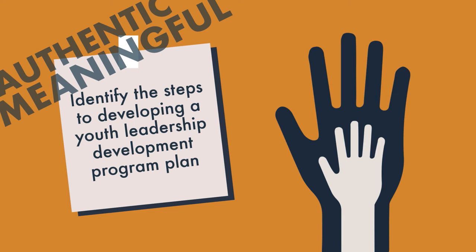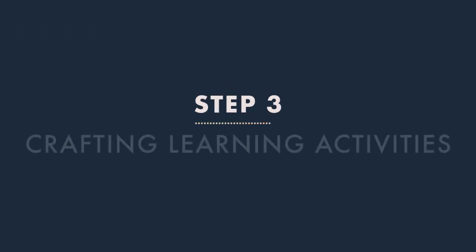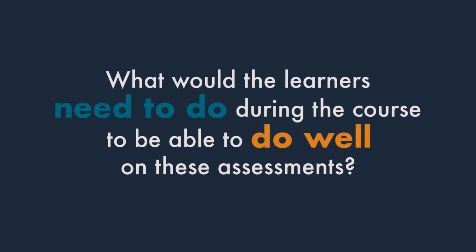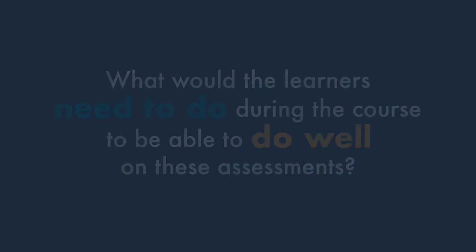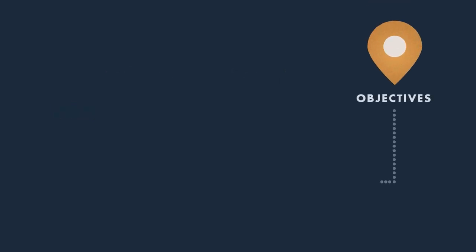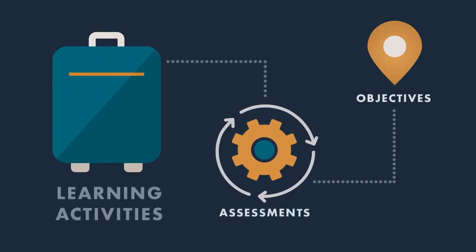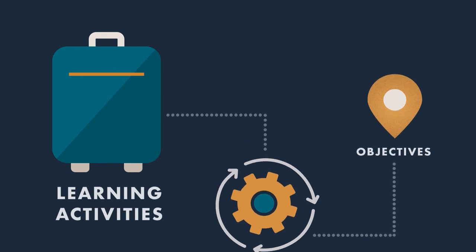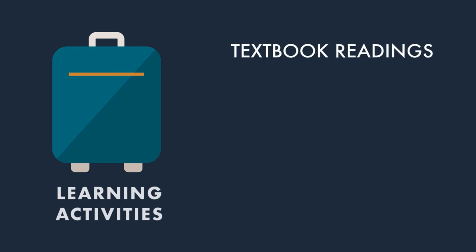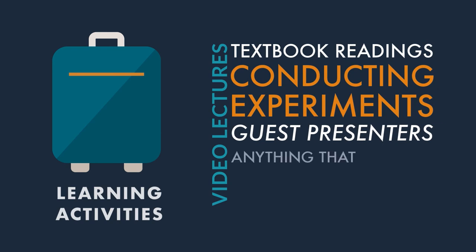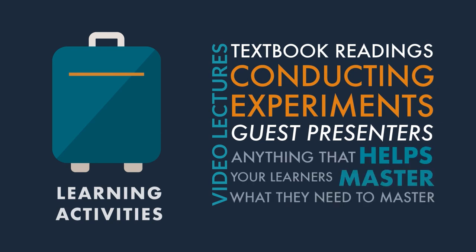So you have your objectives and your major assessments. Then you move on to the third step, which is crafting learning activities. Here's where you ask yourself: what would the learners need to do during the course to be able to do well on these assessments? You know where you're going and what it would look like for your learners to get there. Now you're planning out how to prepare your learners for that journey — readings from a textbook, video lectures, conducting experiments, guest presenters, or anything that helps your learners master what they need to master.